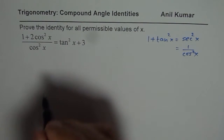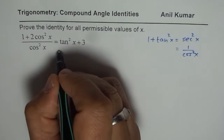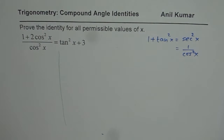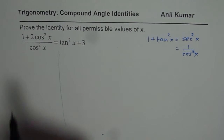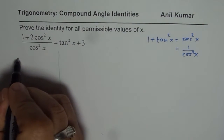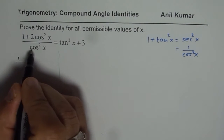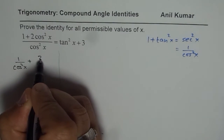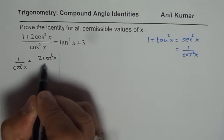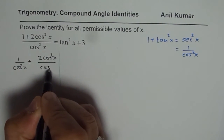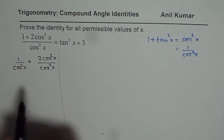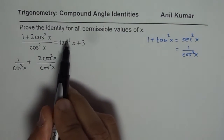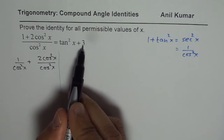We can look at this expression and see what is on the left side and what is on the right side. The left side can be written by breaking it apart as: 1/cos²x + 2cos²x/cos²x. The right side is tan²x + 3.